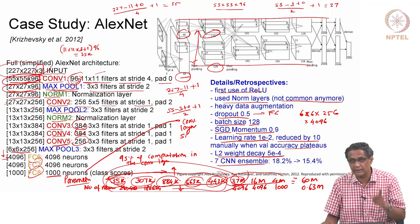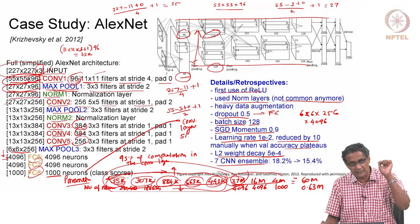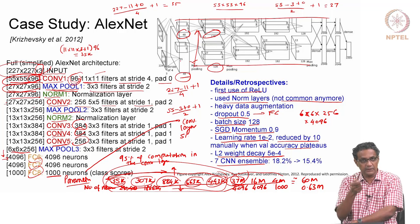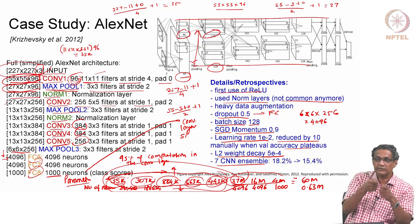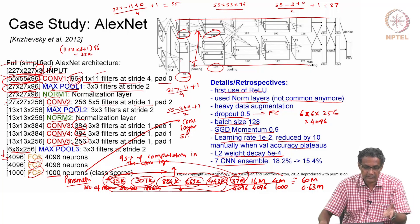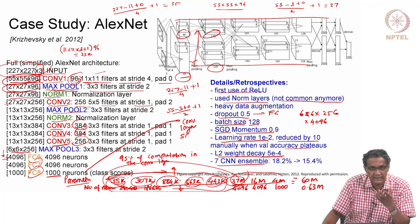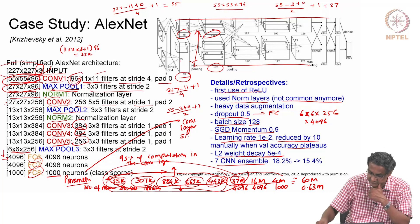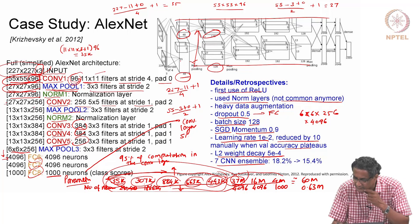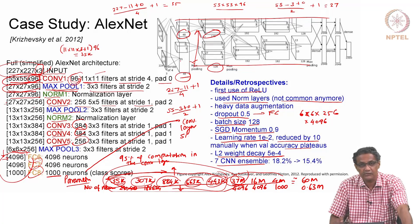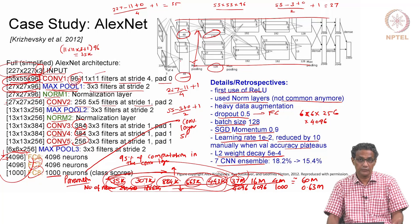But if you look at the number of neurons where actual computation is going on, the CNN occupies most of the computation. Where does computation happen? It happens inside a neuron. If you look at how many neurons are involved in a CNN: 55 × 55 × 96 that many neurons, then 27 × 27 × 256 that many neurons. Whereas if you look at the FC layers, it's very small: 4096, 4096, 1000. So parameter-wise the fully connected layers dominate, but neuron-count-wise it's the other way around.